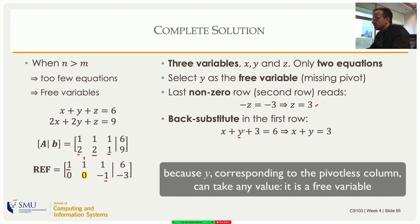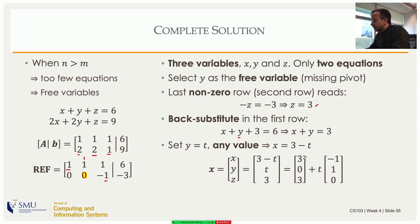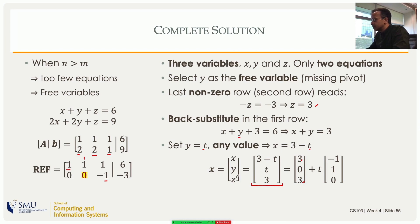Back substituting and setting the free variable y = 0: x + y + 3 = 6 gives x + y = 3, so x = 3. This yields one solution: x = 3, y = 0, z = 3. For the general case, let y = t (any value in ℝ); then x = 3 − t. The complete solution is: x = 3 − t, y = t, z = 3, which decomposes into the vector (3, 0, 3) plus t times (−1, 1, 0).